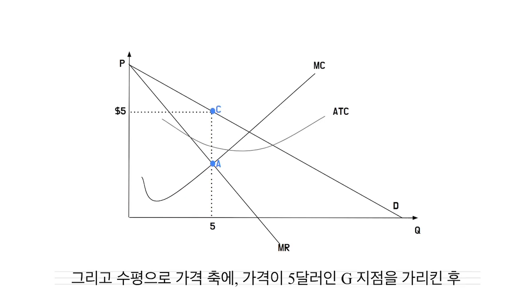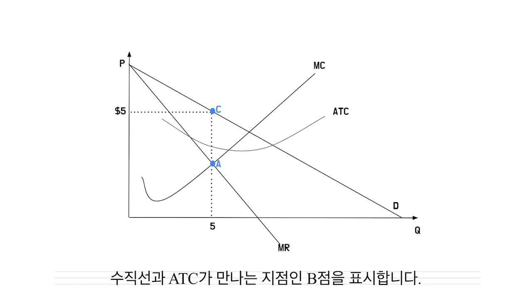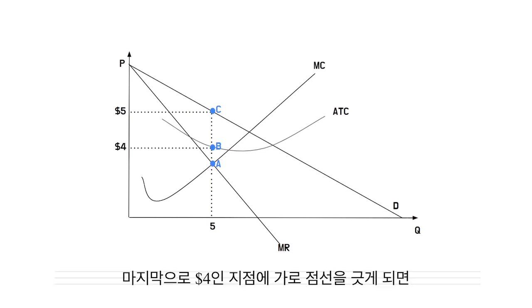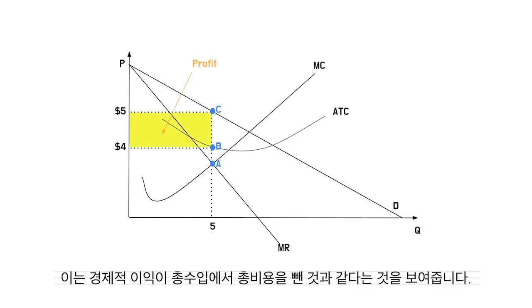And then, horizontally to the price axis, point G, where the price is $5. And if we put point B, which is where the vertical line at ATC meets, and then draw a horizontal dashed line where it is $4, the profit is shown in the graph to be the yellow rectangular area, which means the economic profit equals the total revenue minus the total cost.